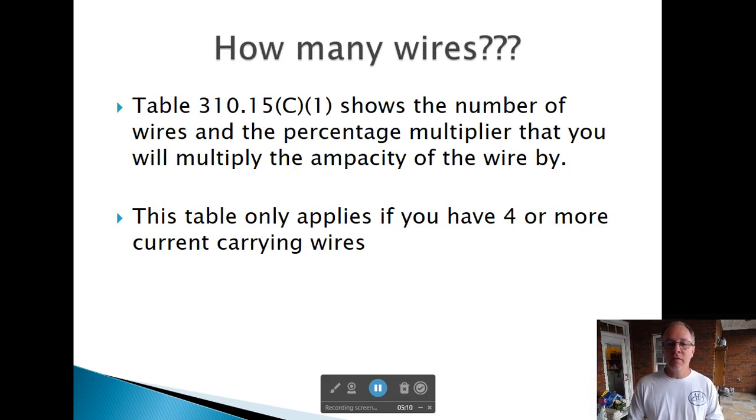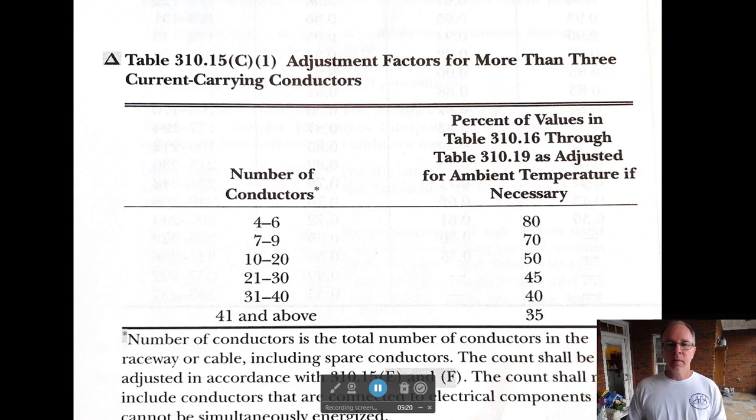We've got to de-rate it. So basically you're saying, okay, we're not going to jump as much because we're not allowed to. So how many wires? We've got to go to Table 310-15-C1, and that shows the number of wires and the percentage multiplier that you will multiply the ampacity by. As you can see here, one to three wires is at 100%, but that's already on Table 310-16. We're looking for seven to nine conductors, which is 70%. So we're going to take that amperage and multiply it times 70%.